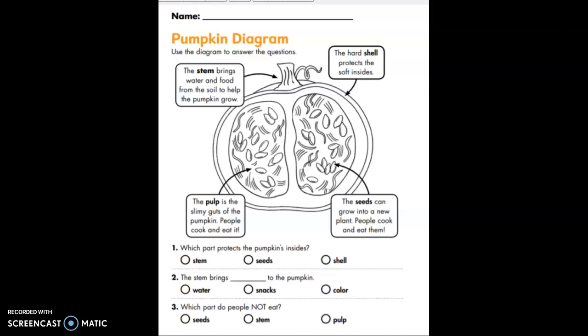Boys and girls, what you're to do on this paper is you're first going to write your first name, your last name, and date on the line, and then you're going to look at this pumpkin diagram. The diagram is going to help you answer these three questions down at the bottom.